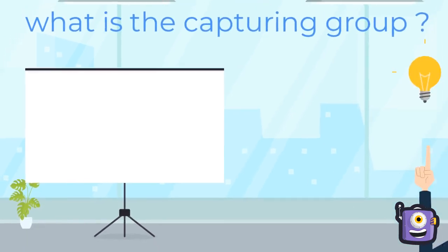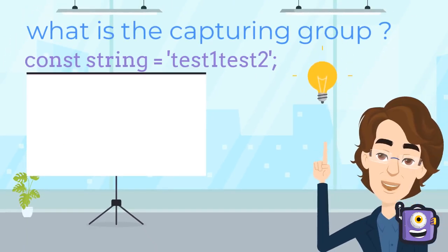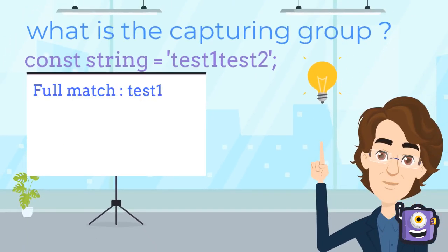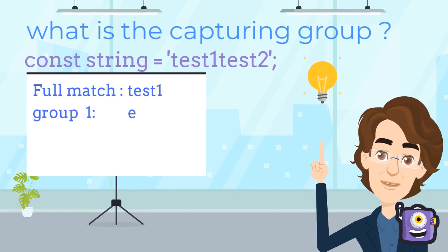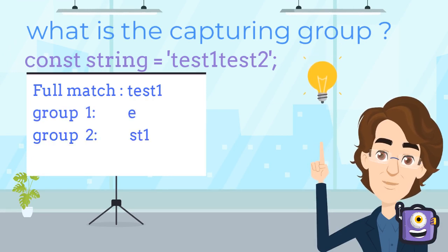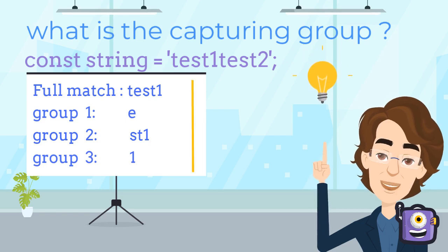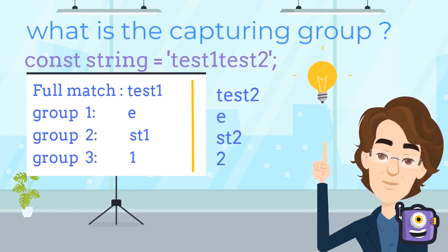In our string test1 test2, the first capturing group for the full match test1 is e, st1, and 1. And for the second full match test2, the capturing groups are e, st2, and 2.